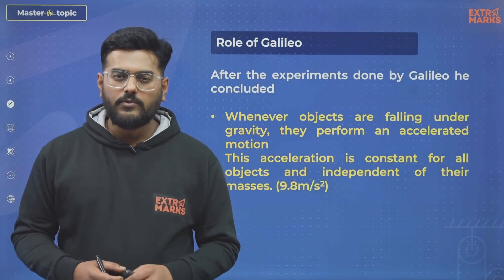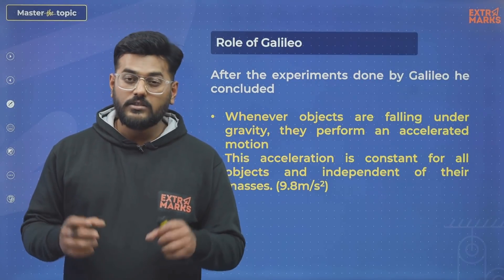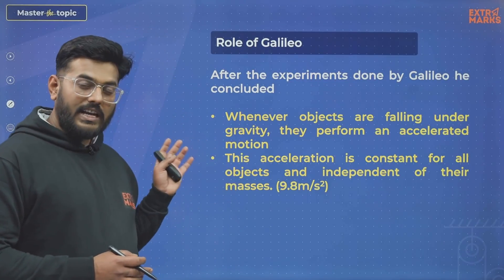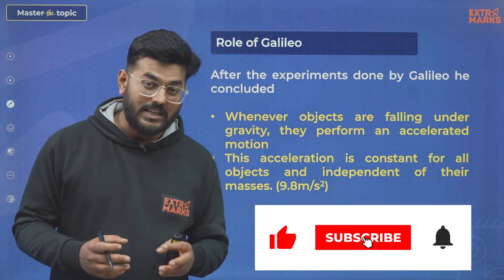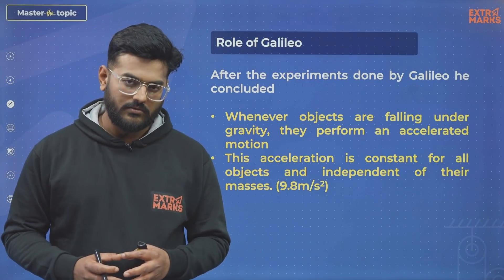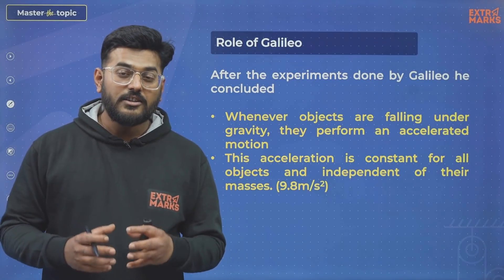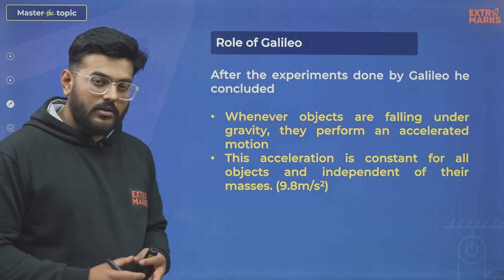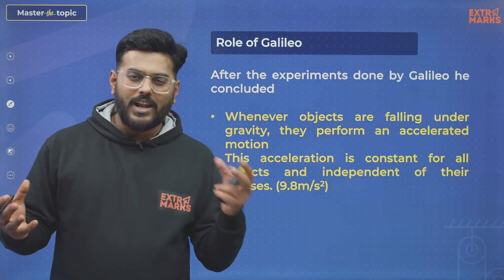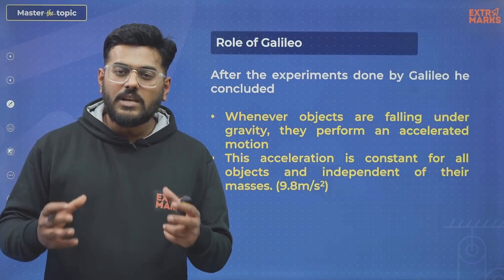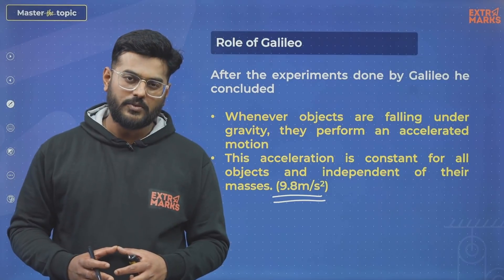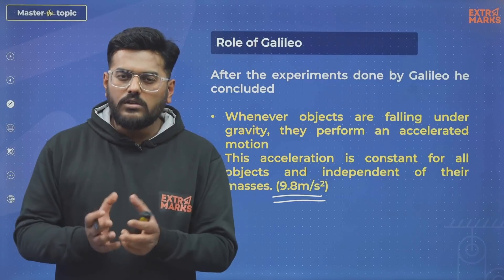Then Galileo performed an experiment. He went to the top of the Leaning Tower of Pisa and threw two objects of different masses. Based on his observation, he was finally able to decode what Free Fall Motion actually is. He concluded that whenever objects are falling under gravity, they perform an accelerated motion — their velocities are not constant but increase with time as they fall downward. He also concluded that this acceleration is constant for all objects, whether a heavier mass, a lighter mass, a feather, or an iron ball — all experience the same acceleration due to gravity. Its magnitude is 9.8 meters per second squared, for all motions near the surface of Earth.